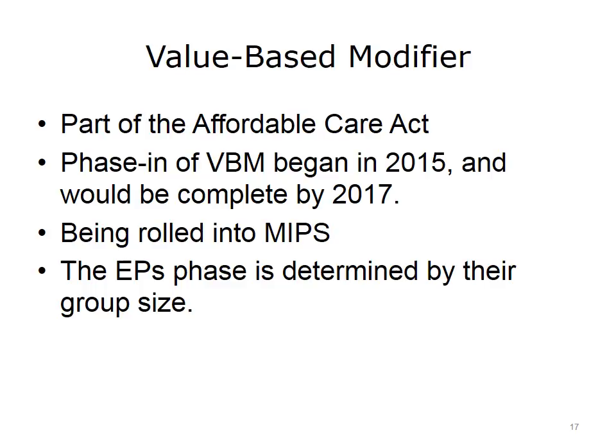Currently, the way the physician's penalty or incentive report is calculated is based on something called the Quality Reporting and Utilization Reports, or QRUR. These reports are sent to providers to show their performance against VBM measures and help providers see performance and how CMS is looking at value and PQRS data.